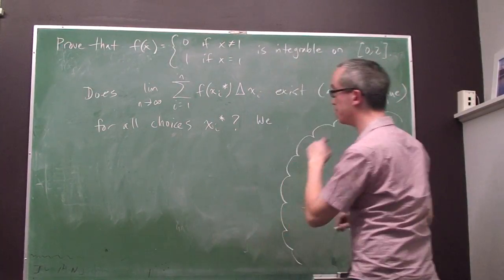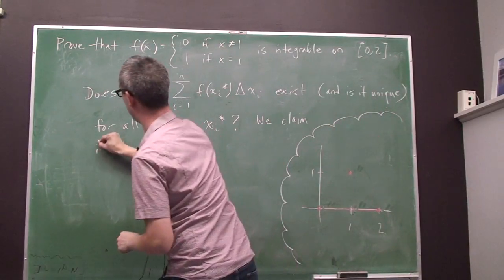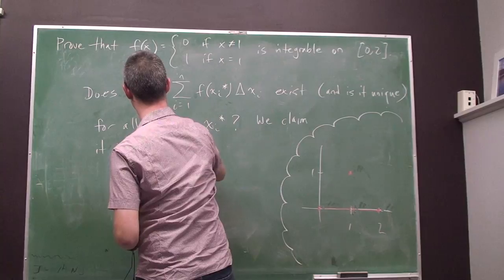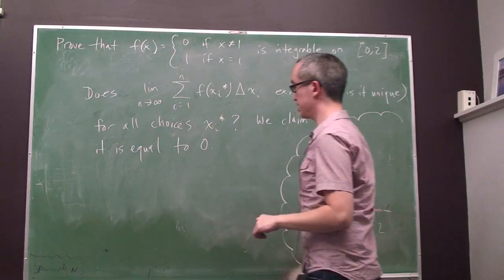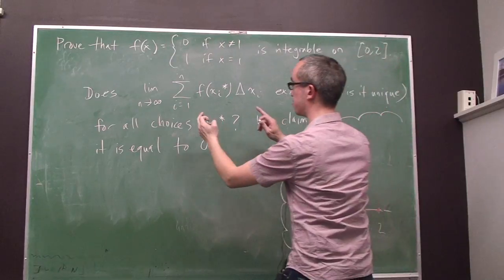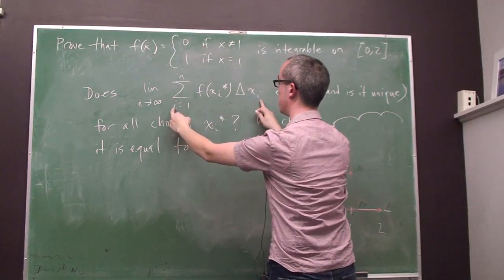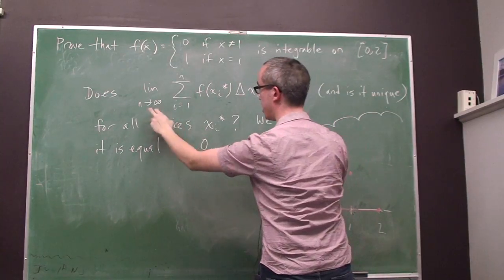So, we claim this limit exists. We claim it is equal to 0. Okay, now what does that mean? Well, it means, is this thing, is this sum, is this object, arbitrarily close to 0, provided n is sufficiently large?